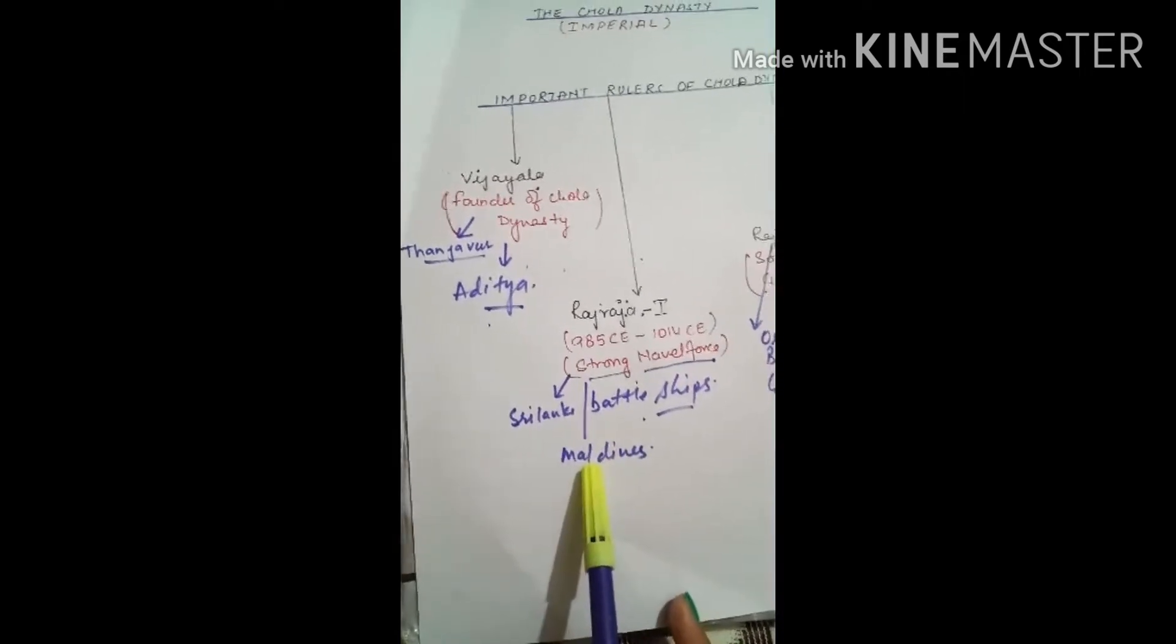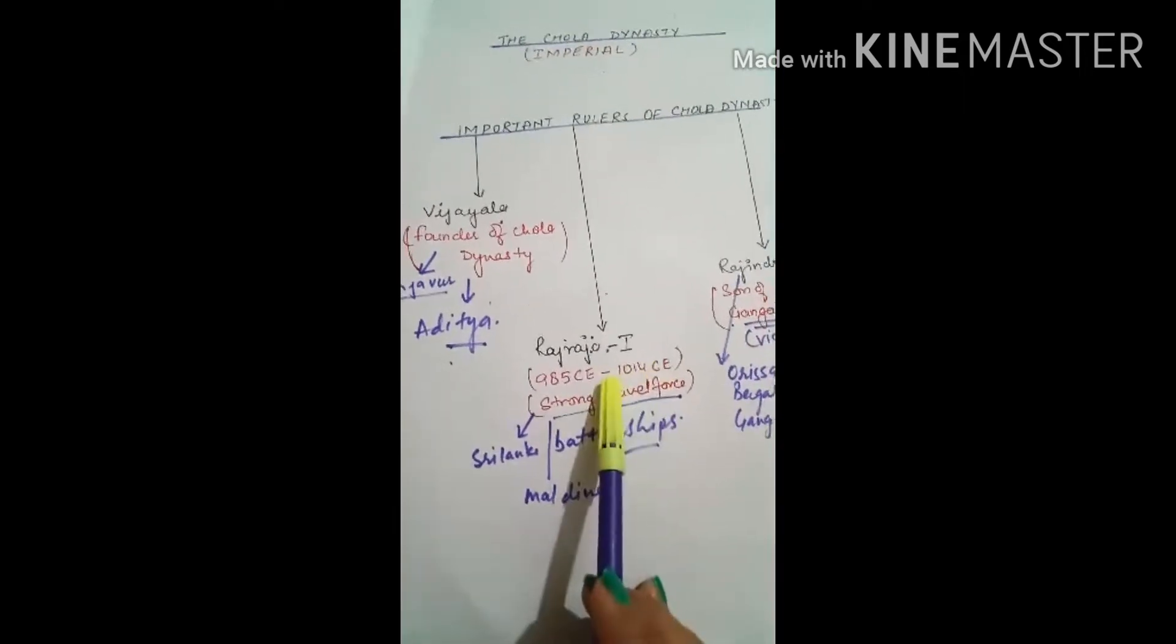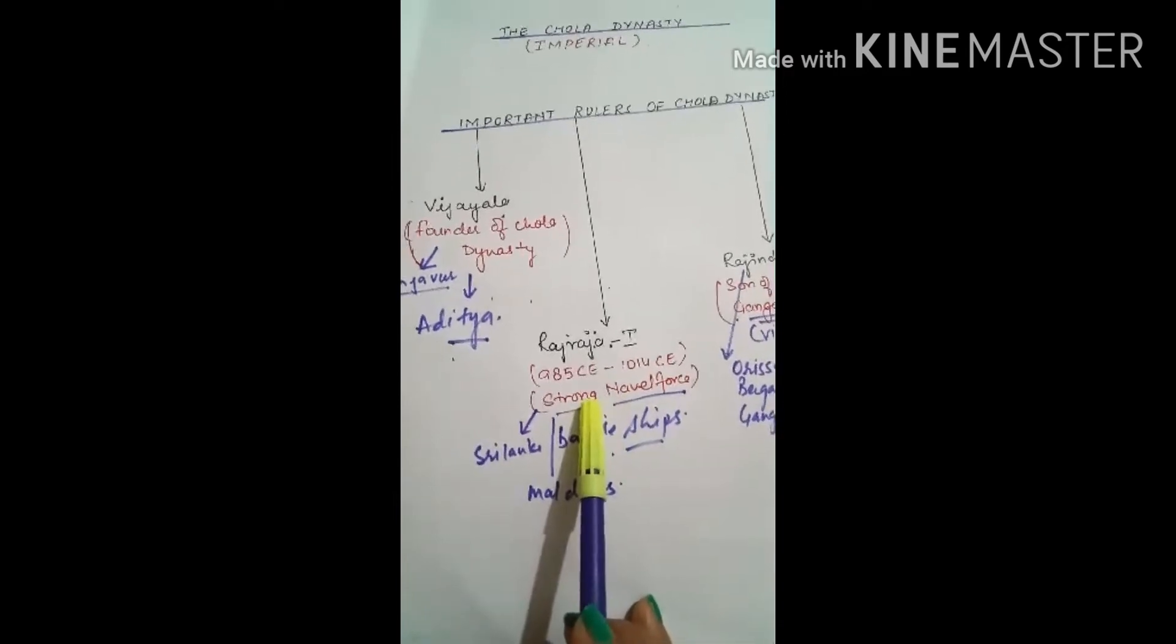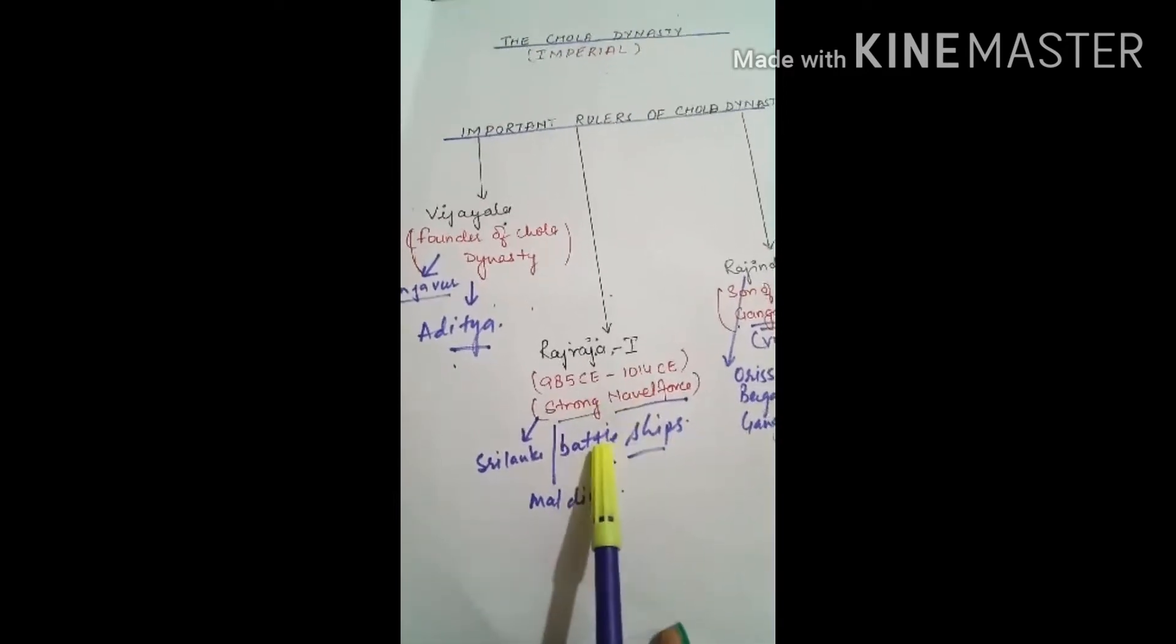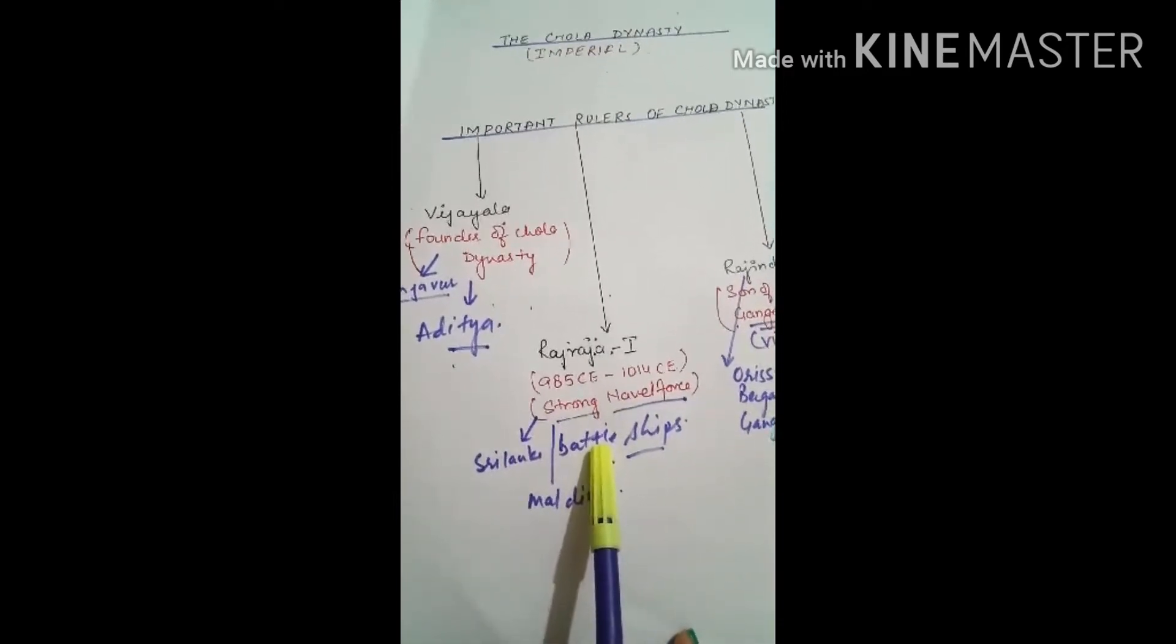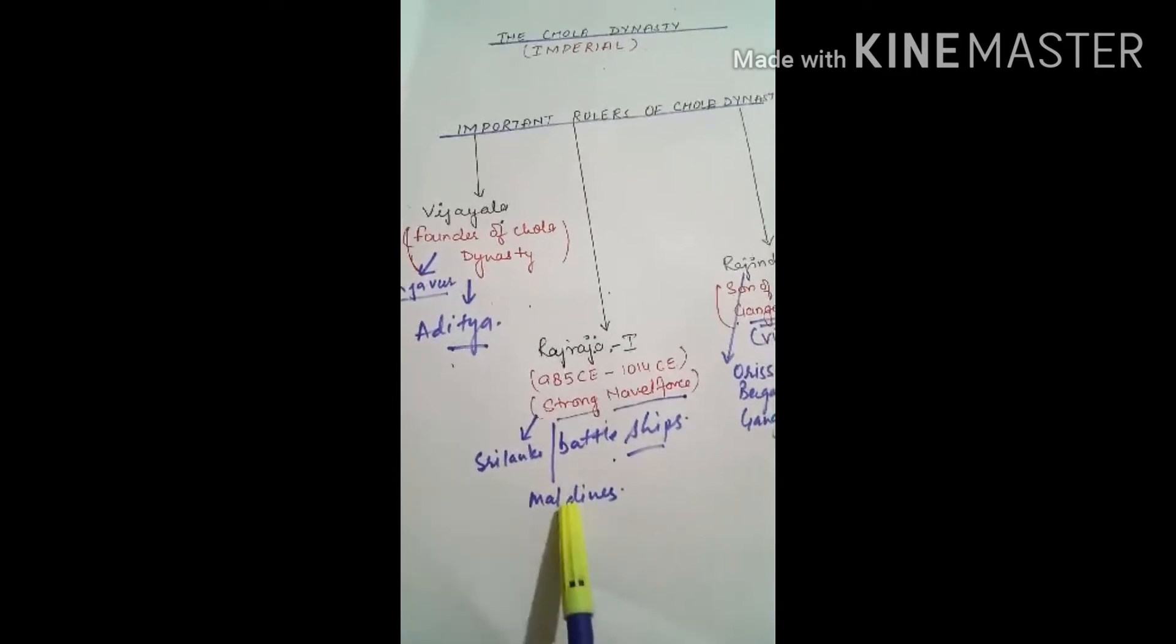He was having well-equipped battleships which could capture Sri Lanka and Maldives.